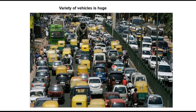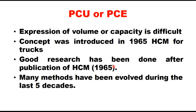In India, types of vehicles are many and they all use the same roadway space, creating very complex operating conditions. When you express volume or capacity in vehicles per hour, it does not indicate actual traffic conditions on the road. Therefore it is common practice to convert all vehicles into an equivalent number of passenger cars using a multiplying factor called the PCU factor. PCU is used to express volume or capacity in a single uniform unit, a concept introduced in the 1965 Highway Capacity Manual of the US, originally only for trucks.